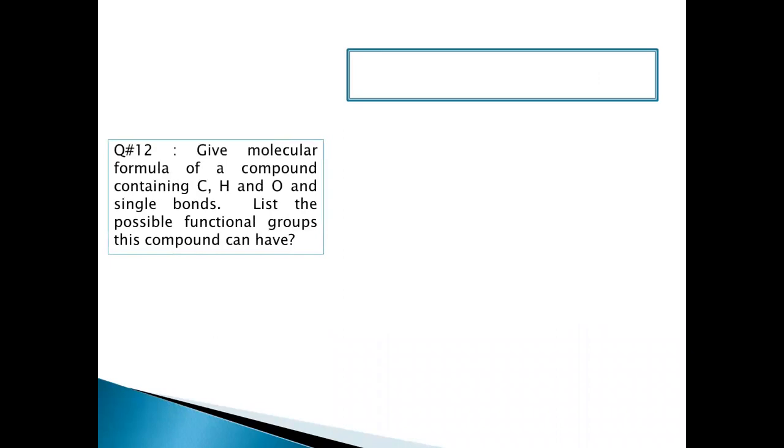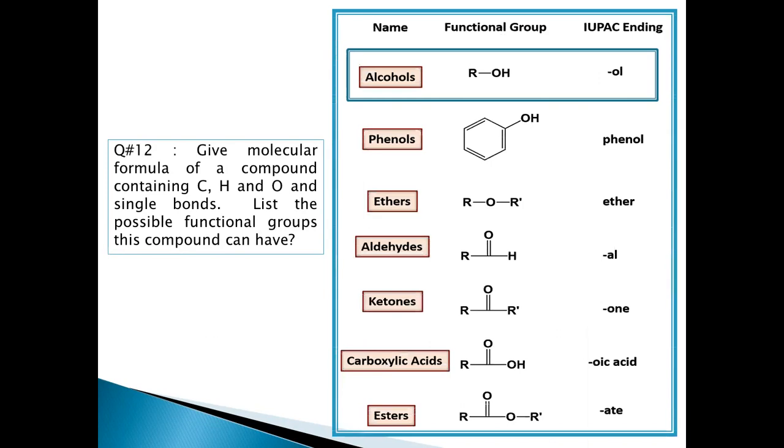The first question is to give the molecular formula for compounds containing carbon, hydrogen, oxygen and single bonds. List the possible functional groups this compound can have. First, let's look at the functional groups.